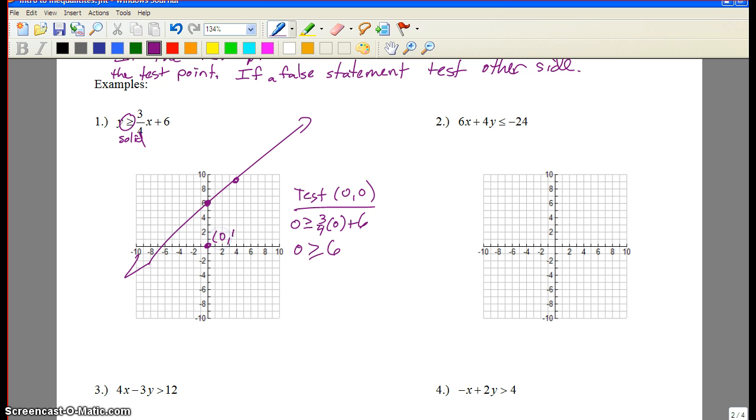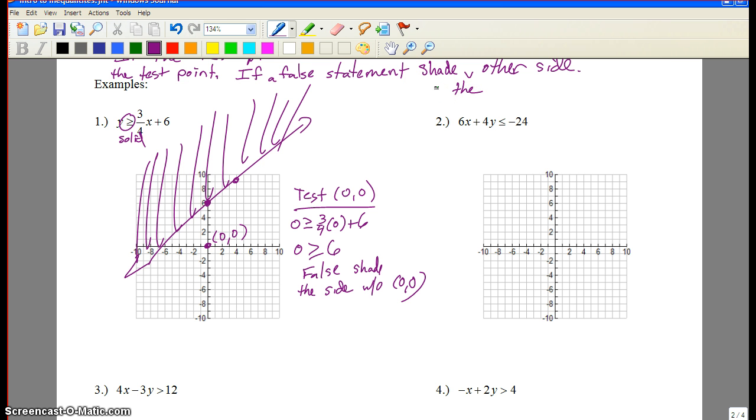Tested zero, zero. True or false? Zero greater than six? That's false. So what do we do? Shade the side without zero, zero. So it's above. Apparently, guys, I wrote test instead of shade up here. Shade the other side. I'm not sure whether I said test or shade. I'm sorry about that. Just slipped. Thanks for pointing that out. If it's a false statement, shade the other side. It probably clarifies things a little bit for you guys.